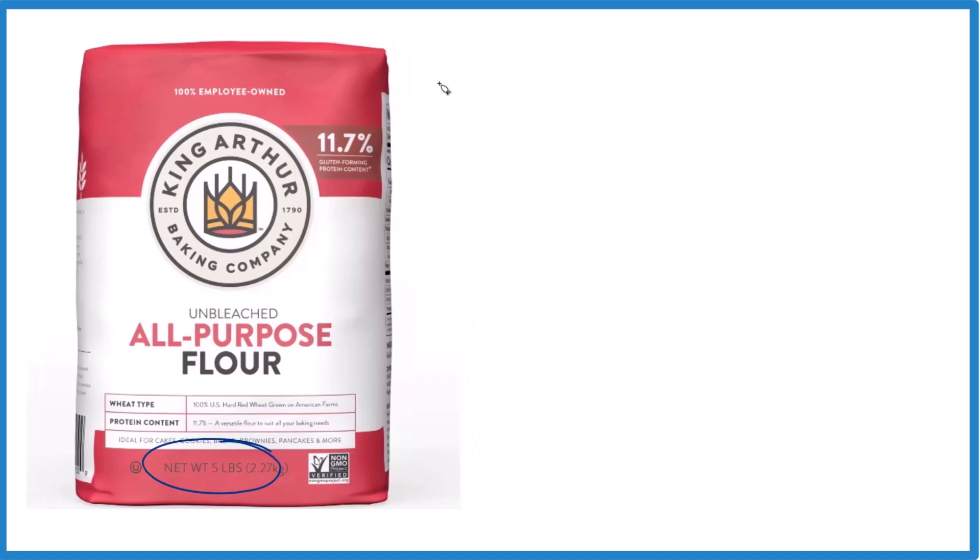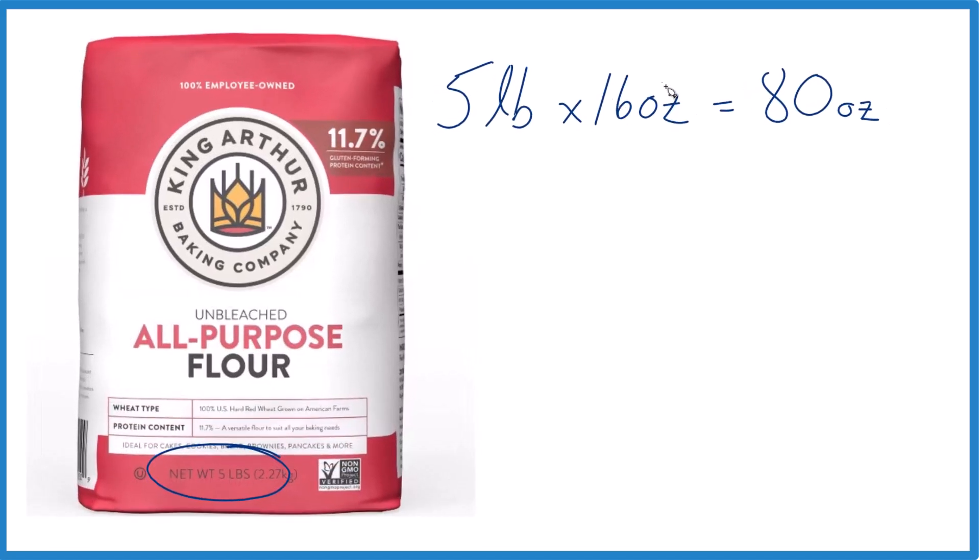First off, we need to get these pounds to ounces. One pound is 16 ounces and we have five pounds, so we just take five pounds times 16 ounces and we end up with 80 ounces in our bag of flour.